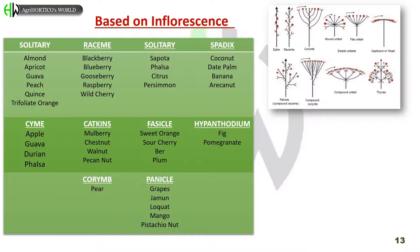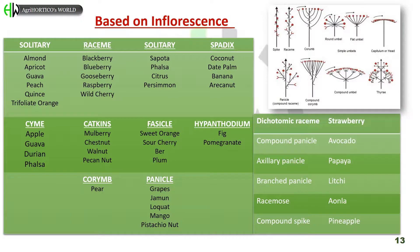Corymb is found in pear. Panicle inflorescence is found in grapes, jamun, loquat, mango, and pistachio nut. Some major inflorescence types include dichasial cyme in strawberry, compound panicle in avocado, axillary panicle in papaya, branched panicle in litchi, bracteate raceme in amla, and compound spike in pineapple.